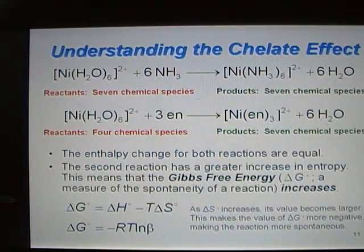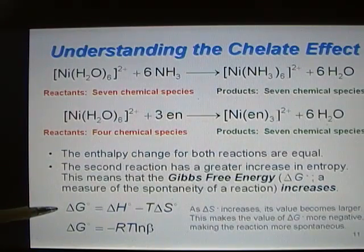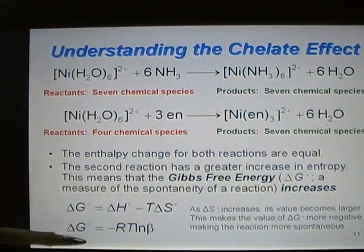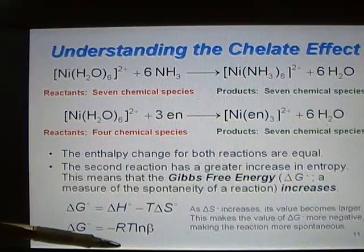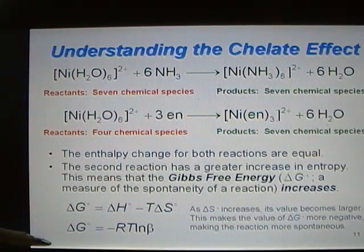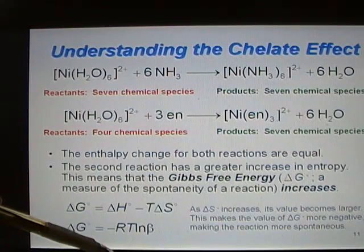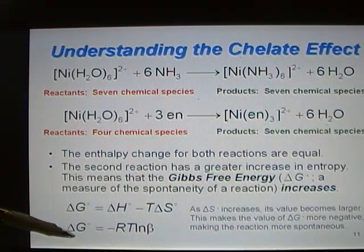This means that the Gibbs free energy, ΔG°, which is a measure of the spontaneity of the reaction, increases in magnitude. The more negative the value for ΔG, the more spontaneous the reaction will be. As ΔS increases, the negative TΔS term becomes more negative, leading to a more negative value of ΔG. And ΔG is directly proportional to the natural log of the formation constant, so as ΔG changes, the formation constant also changes.